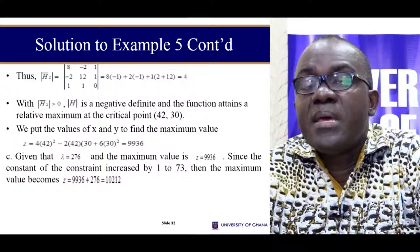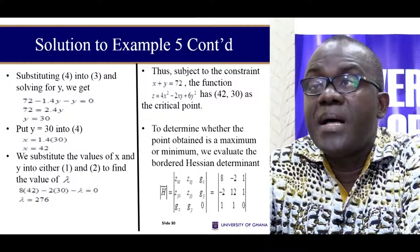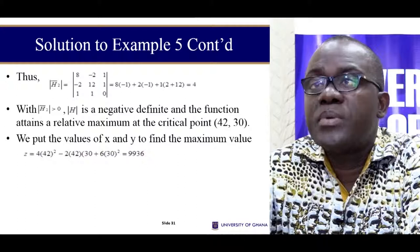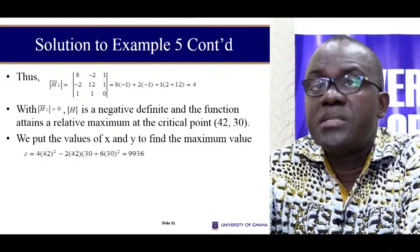In this case we have a maximum with the constraints that we have. We form our Bordered Hessian determinant, which we evaluate to be what we have over here. We have these two critical points, which we know is a maximum from the second-order conditions. We slot the values over here and we are able to calculate the maximum point.